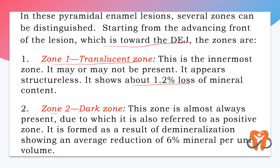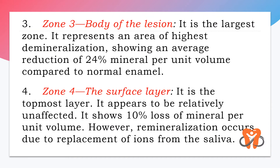Zone 2 is the dark zone, almost always present and therefore referred to as a positive zone. It is formed as a result of demineralization and there is a reduction of 6% mineral content per unit volume. Zone 3 is the body of the lesion — the largest zone — representing the area of highest demineralization with a reduction of 24% mineral content compared to normal enamel.